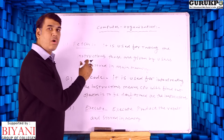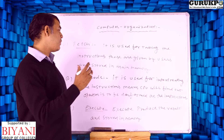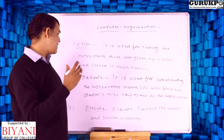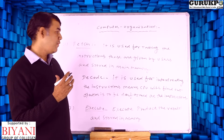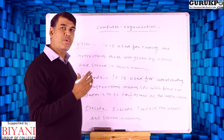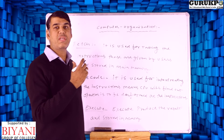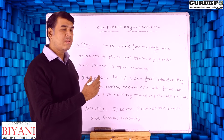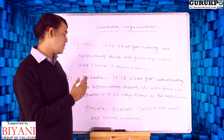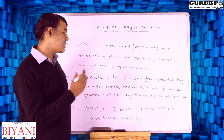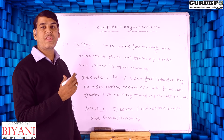Secondly is called decode. Decode means the operation which we use for interpreting the instructions. The CPU will find out what operation is to be performed on the instruction. The third operation is called execute. Execute means produce the result and after that store it in the memory.